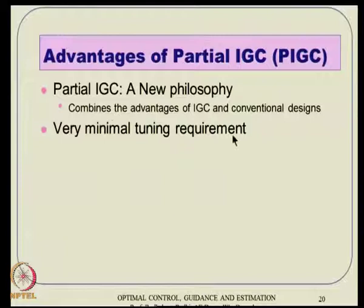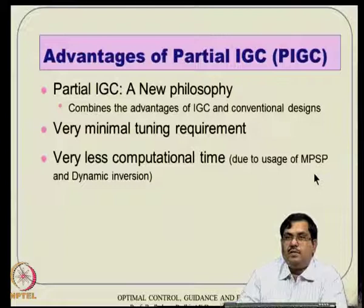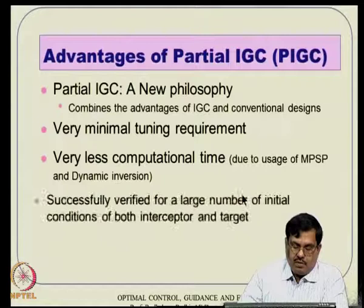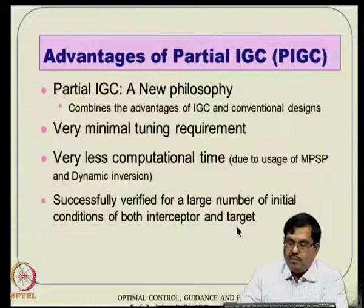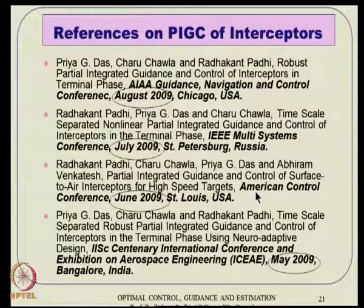The advantages of partial IEGC: it is a new philosophy that combines the advantages of both IGC and conventional design. Very minimal tuning is required — that is a big fact; IGC community designs typically have tuning difficulty, but partial IGC does not. Very little computational time is required. For the outer loop we propose MPSP or MPSC, and for the inner loop we use dynamic inversion. It has been successfully verified for a large number of initial conditions for both interceptor and target, and comparison shows partial IGC is better than both conventional and one-loop IGC designs.